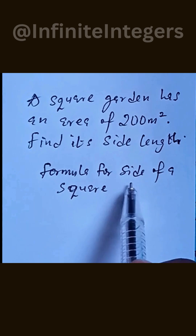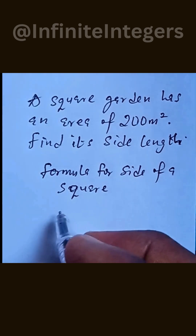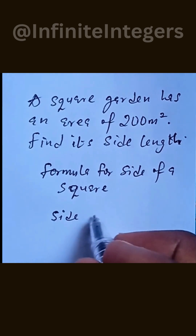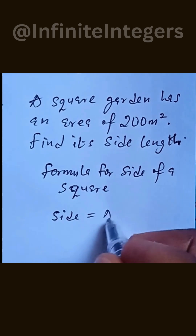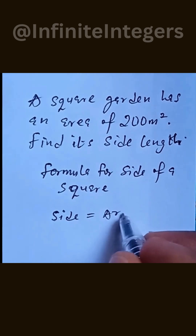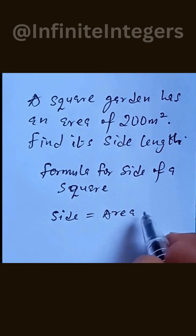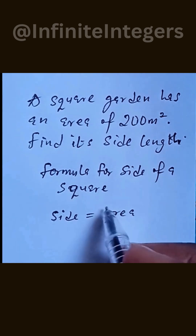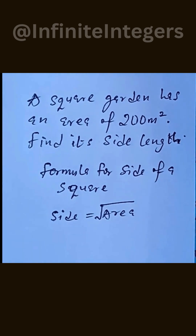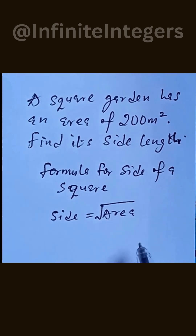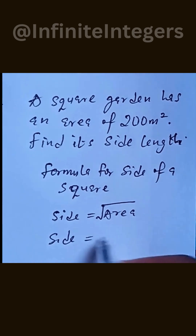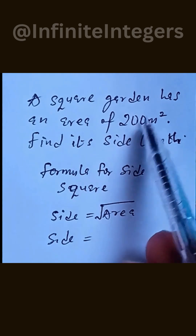The formula gives us the side of a square: the side is equal to the square root of the area. In order to find the side, we need to take the square root of the area.